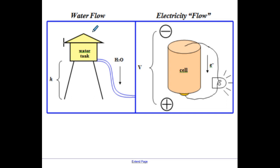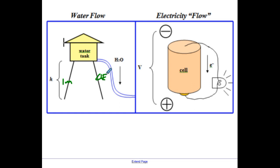The idea behind voltage is it's how much energy something has. The analogy we sometimes use is a water tank. If you had a water tank that was way above the ground — say this height was 100 meters — then if water were to start leaking out of the tank, it would have a lot of energy by the time it hit the ground, because it has a lot of distance to fall. So the change in energy would be quite great, and a water tank that's way above the ground would have what's known as high voltage in this analogy.